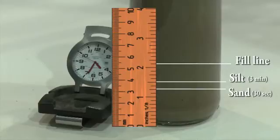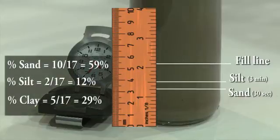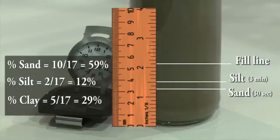The equations on the left of the screen illustrate how these measurements can be converted to percentages of sand, silt, and clay in this sample. These percentages can be used to determine if the soil is granular, or either cohesive, or granular cohesive.